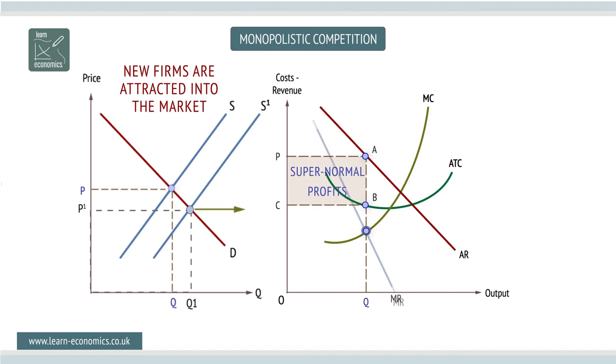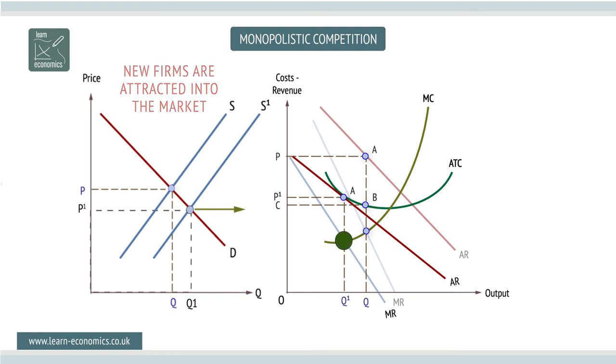Existing firms that cannot differentiate themselves will leave the market. This process continues so that the marginal firm operates just where marginal revenue equals marginal cost, and only makes normal profits at price P1. This provides the incentive to innovate and increase differentiation, and hence return to making supernormal profits.